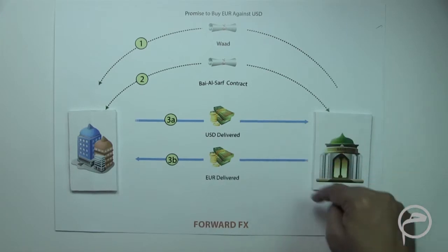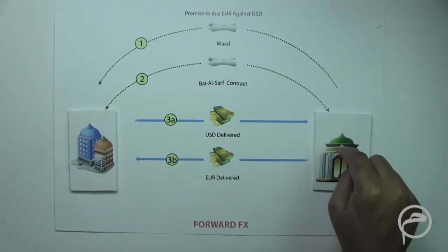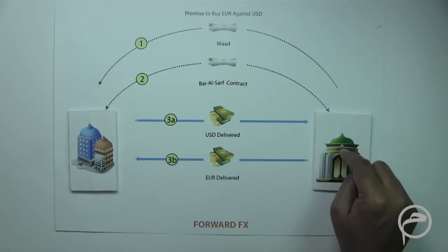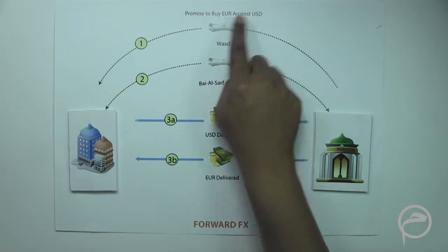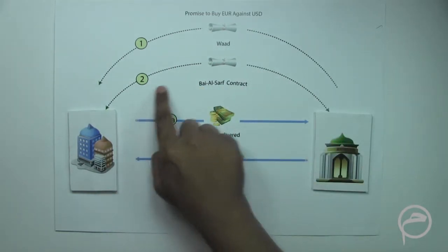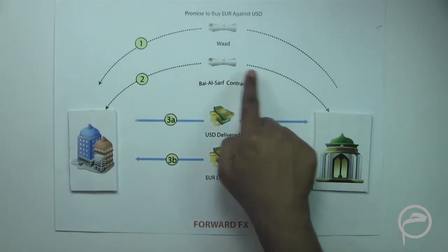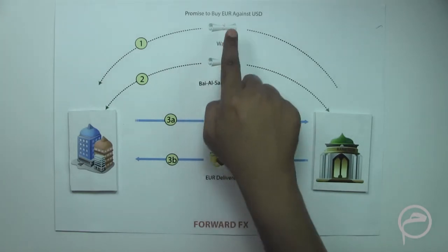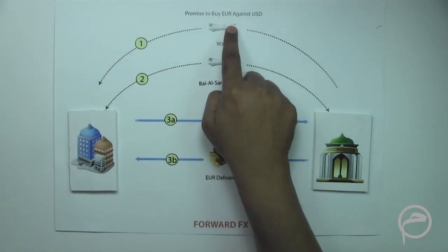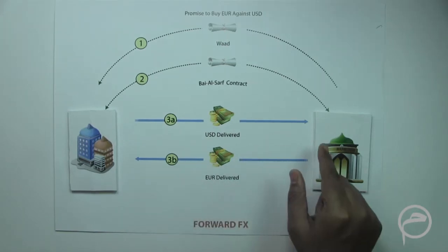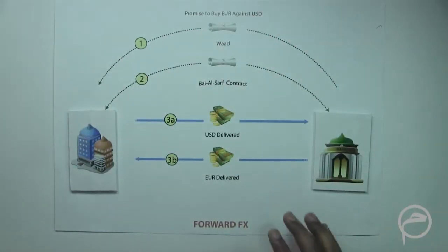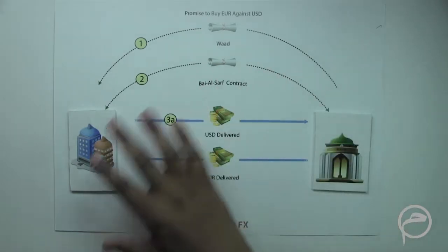On the trade date, the corporate exercises its right under the given undertaking and obligates the Islamic bank to fulfill its promise — to sell the euro for dollars. Therefore, both parties enter into an offer and acceptance to exchange both the dollar and the euro, and these currencies are delivered to both parties. This is basically how an Islamic forward FX is structured.